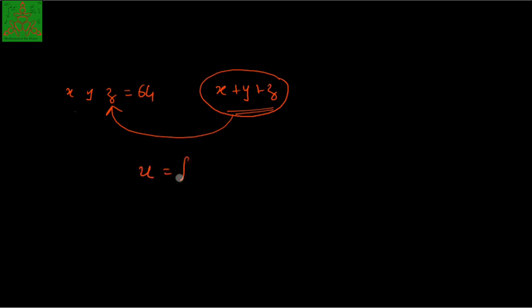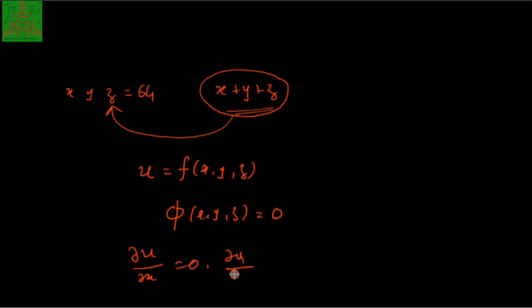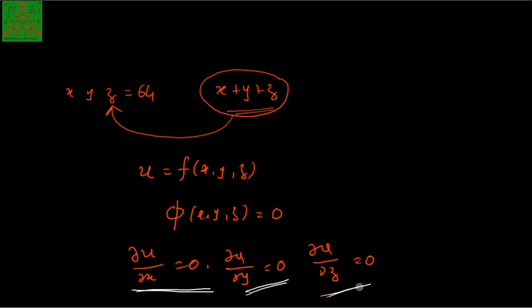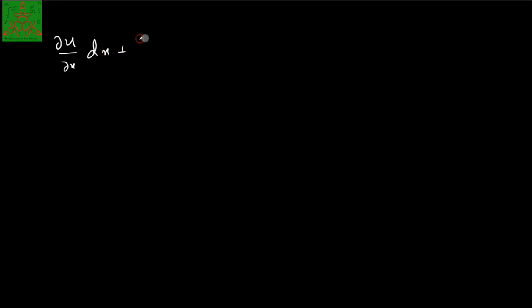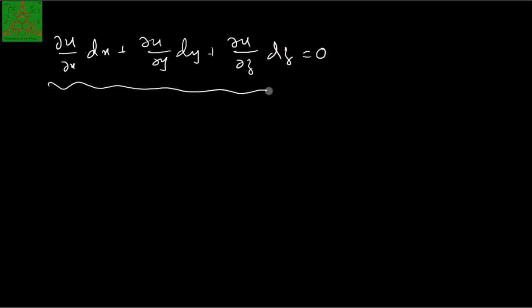If you have the given function u which is a function of x, y, z and it is connected with the relation phi(x, y, z) = 0, we calculate del u/del x = 0, del u/del y = 0, and del u/del z = 0 because this function has a stationary value at this point. Since these partial derivatives are zero, we can write: (del u/del x)dx + (del u/del y)dy + (del u/del z)dz = 0, which is nothing but the total differential du.